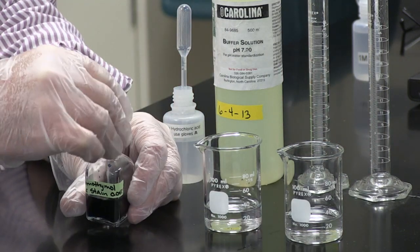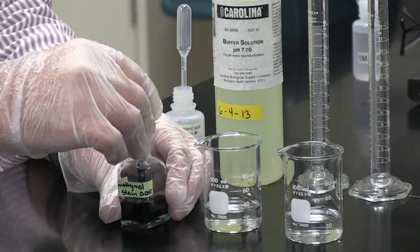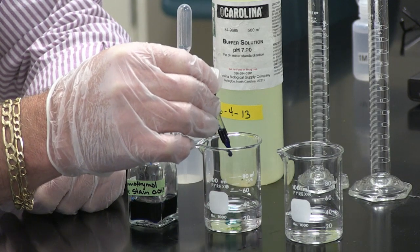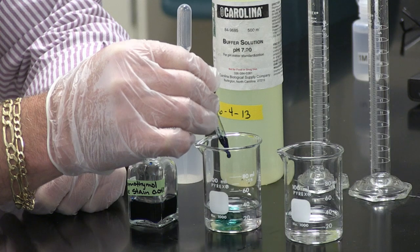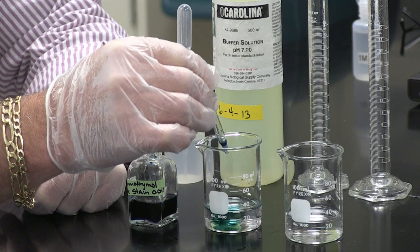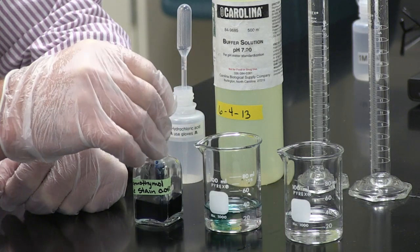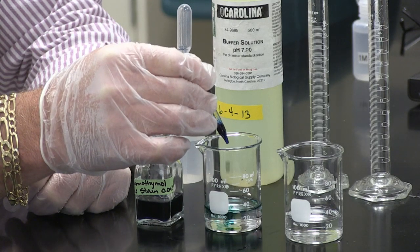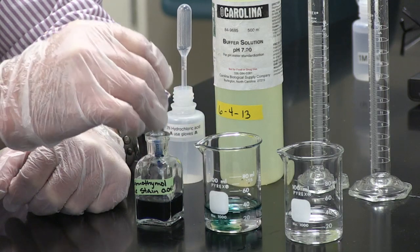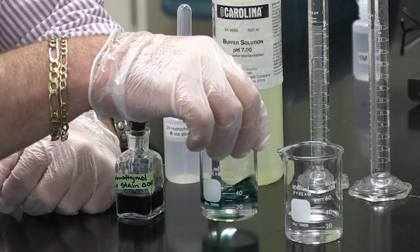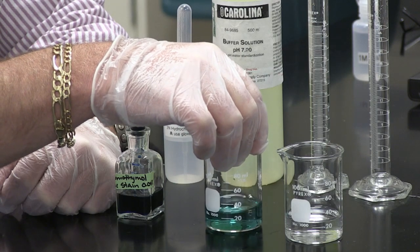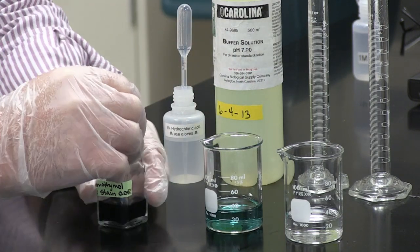Next, we are going to add the indicator bromothymol blue and I am going to add about 20 drops. Give it a little stir. You can see that we have a nice blue color there.